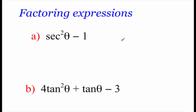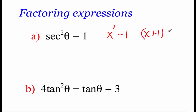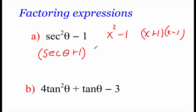Now we're going to look at factoring some trig expressions, and I want you to ignore the trig for right now. The first one is secant squared of theta minus one. Pretend it says x squared minus one — that's difference of perfect squares, so it factors as x plus one times x minus one. But we had secant, not x, so it factors as secant of theta plus one times secant of theta minus one.